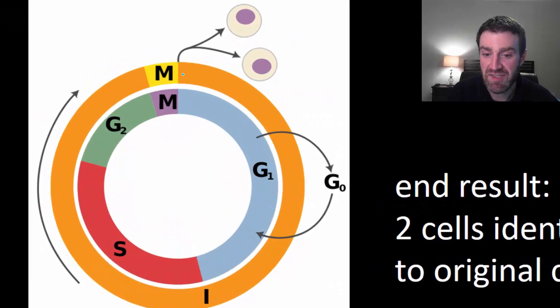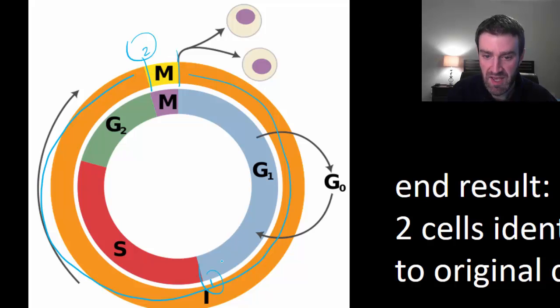We've got interphase here, which is by far the longest part of this cell cycle. This is mitosis, the second step. So step one: interphase, step two: mitosis, and they're not really showing cytokinesis here but it immediately follows mitosis.